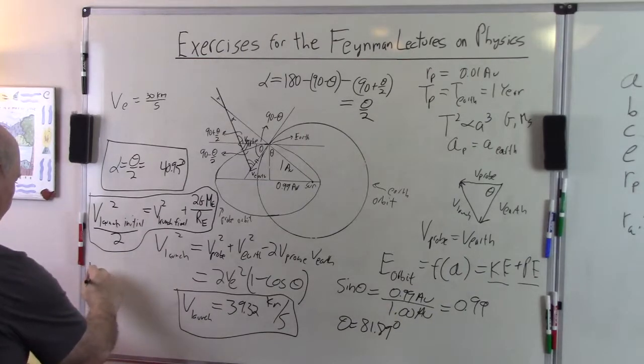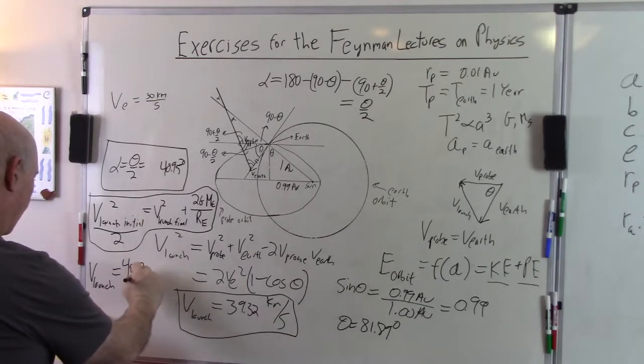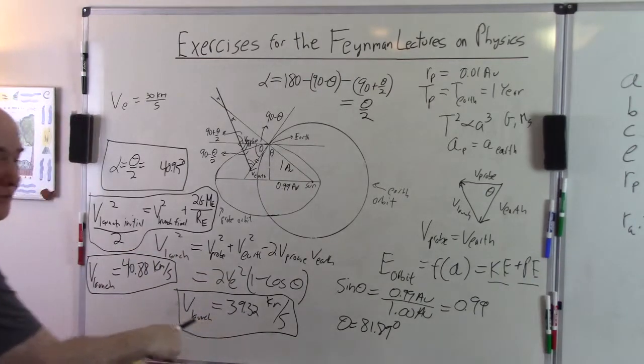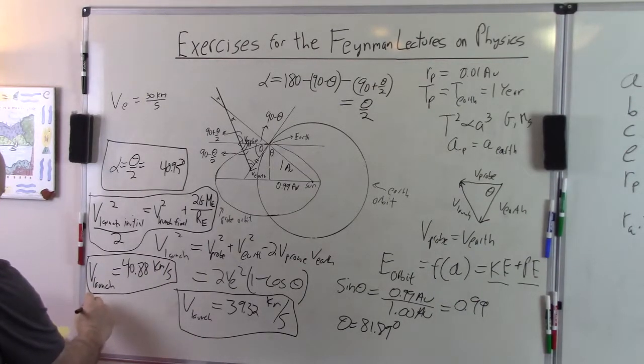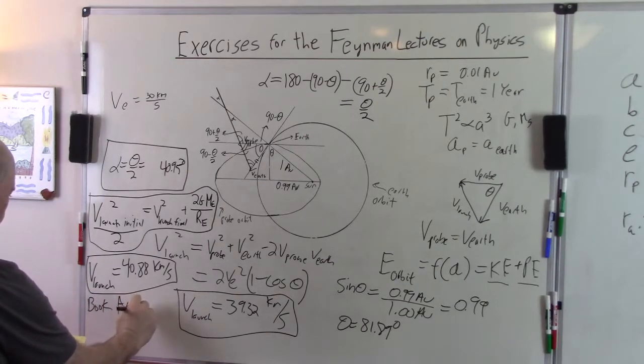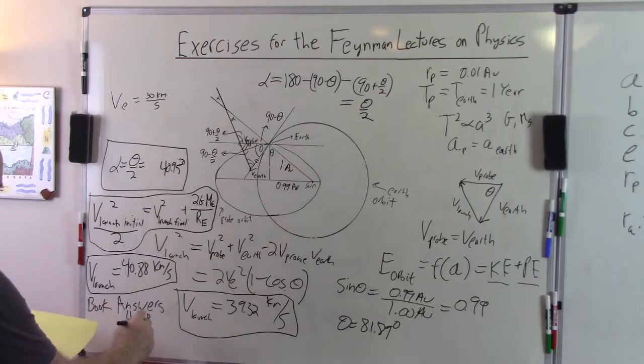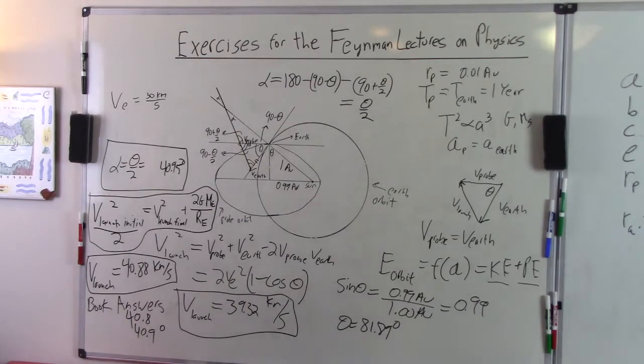So when we plug in this, and I plug this into here, I actually get that V launch is equal to 40.88 kilometers per second instead of the 39.32. We have to give it a little more energy to get out of the Earth's gravitational pull. And the book gives, the book answers are 40.8 and 40.9 degrees. The book isn't always calculating that accurately. So I think this is a more accurate answer. So I'm sorry for that correction, but I thought I would go back and add this to the previous video. Thank you.